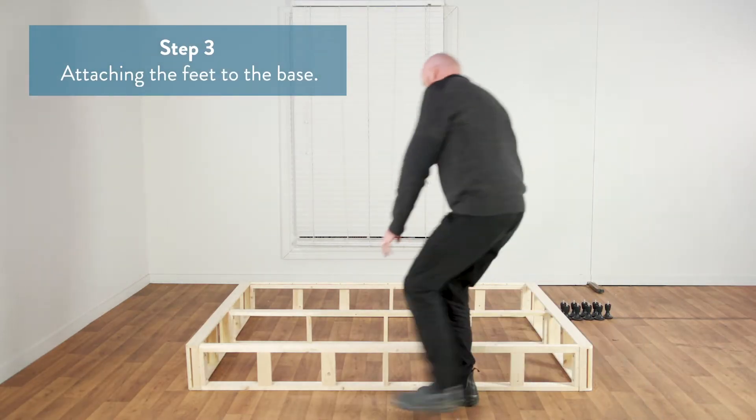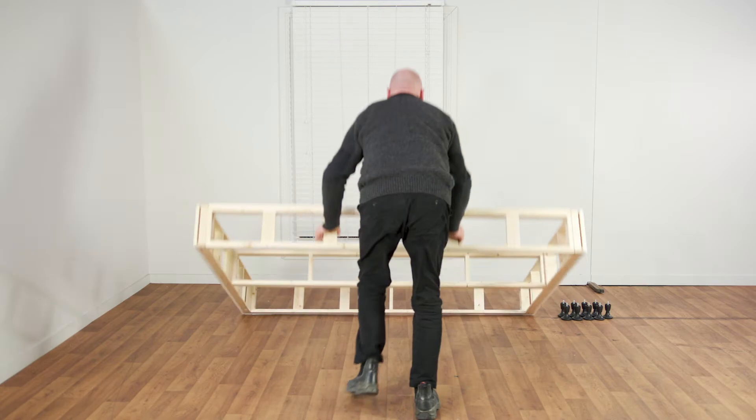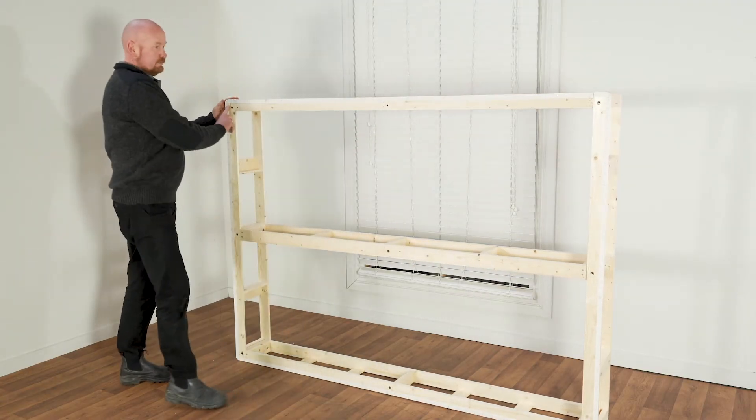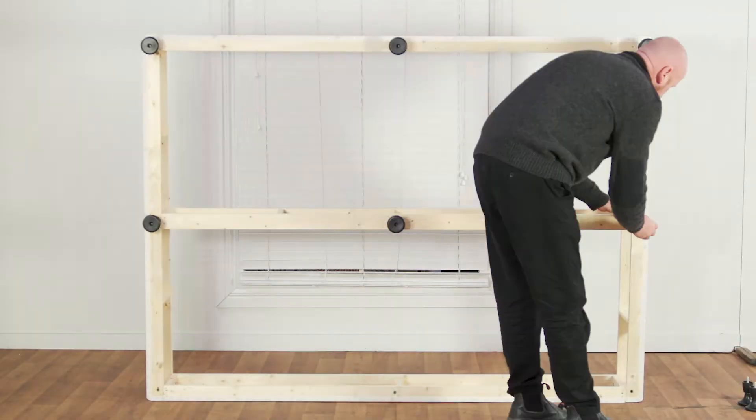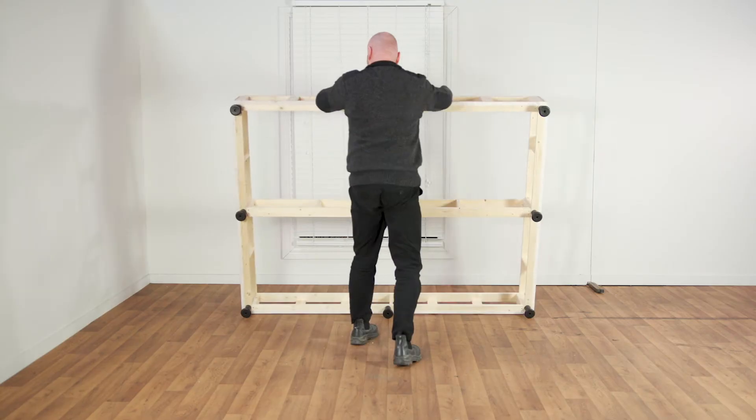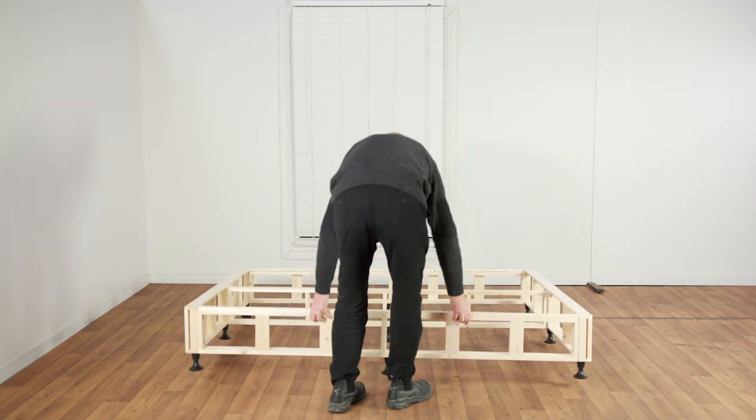Attaching the feet to the base: lift the base carefully to stand on its edge. Screw in the nine feet securely into the base of the bed, three running down each length of the frame piece. Carefully turn the base back over onto the feet.